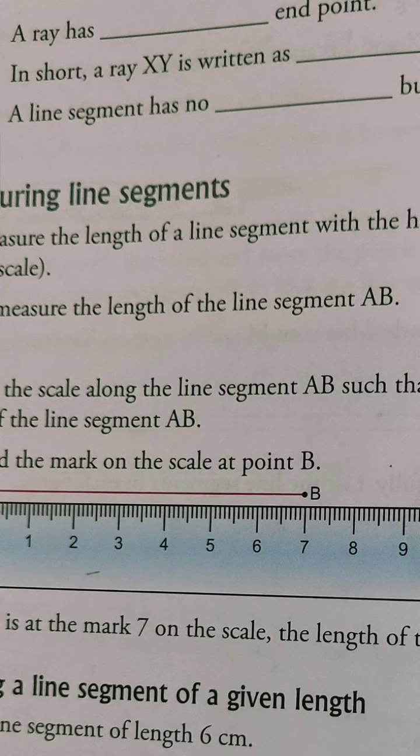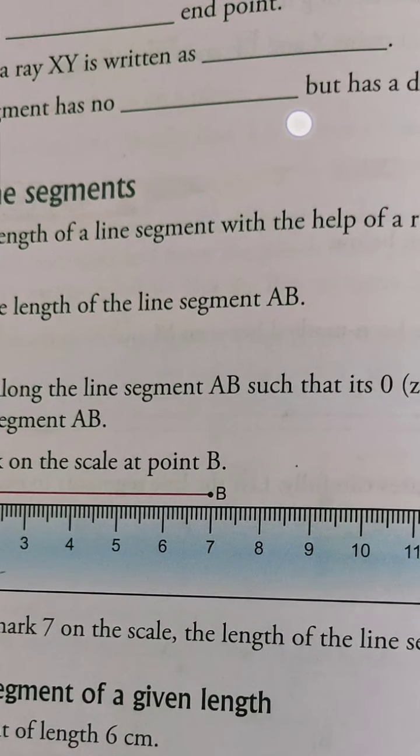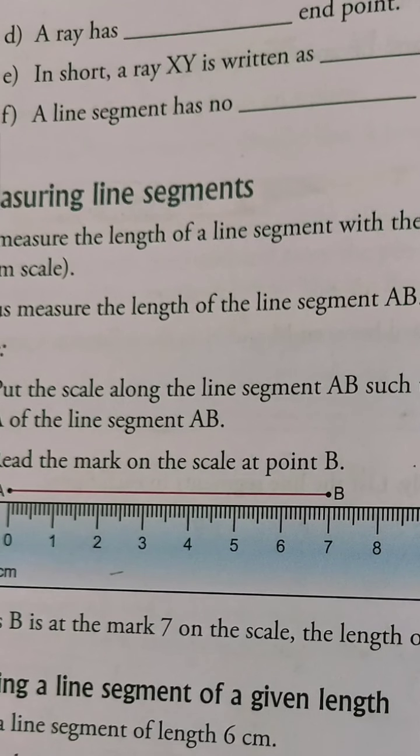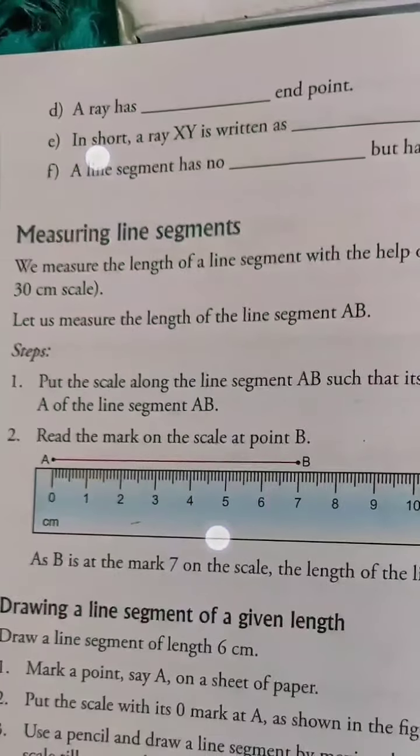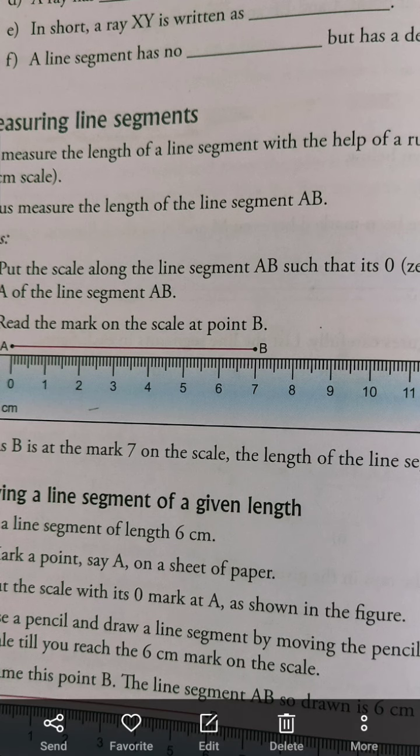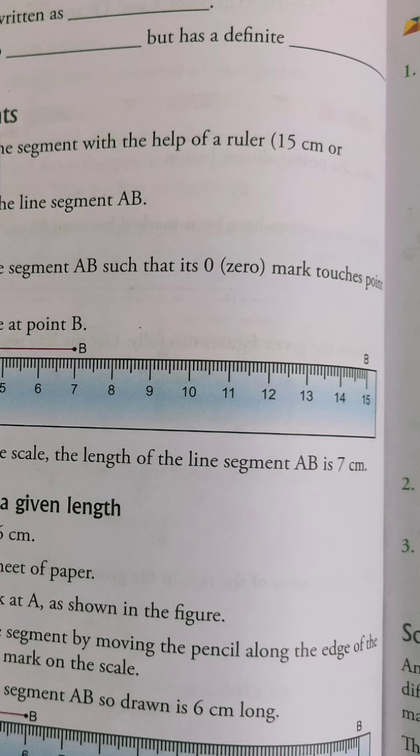Coming to part F. A line segment has no blank but a definite blank. We did this a little while ago. A line segment has no width, right? We made a box and we said that box has width, so we can't call it a line segment. So we will say no width. Width also means breadth. We write it as width or breadth, B-R-E-A-D-T-H. There is no breadth, but it has a definite length. A line segment definitely has a proper definite length.